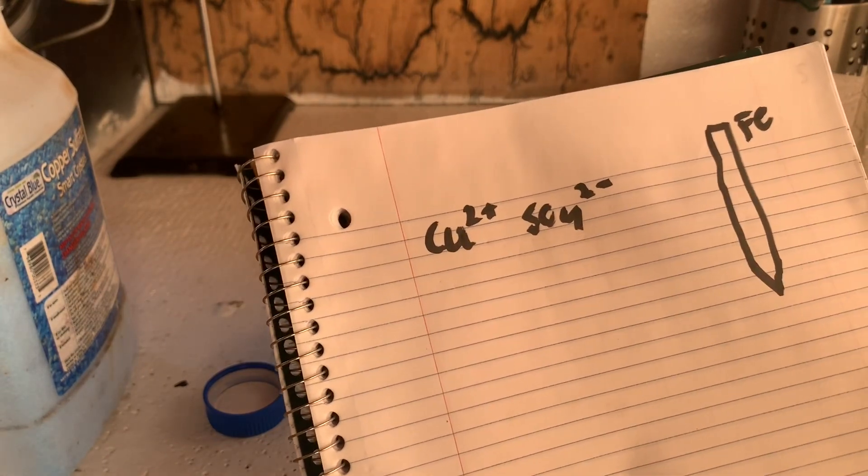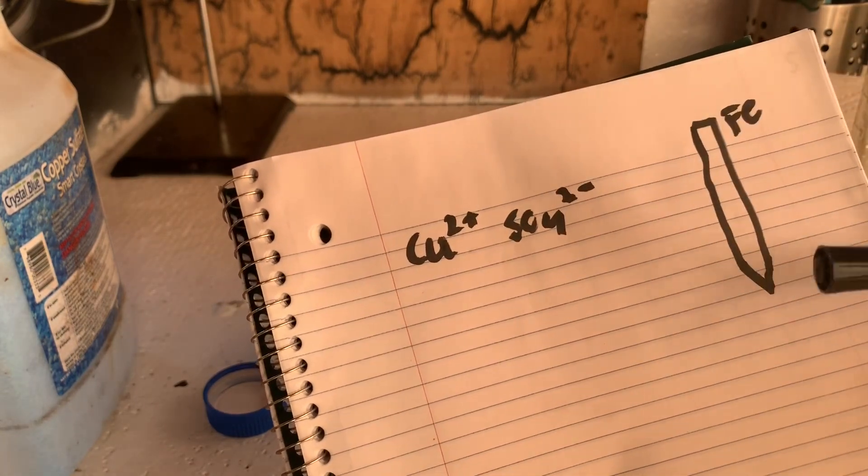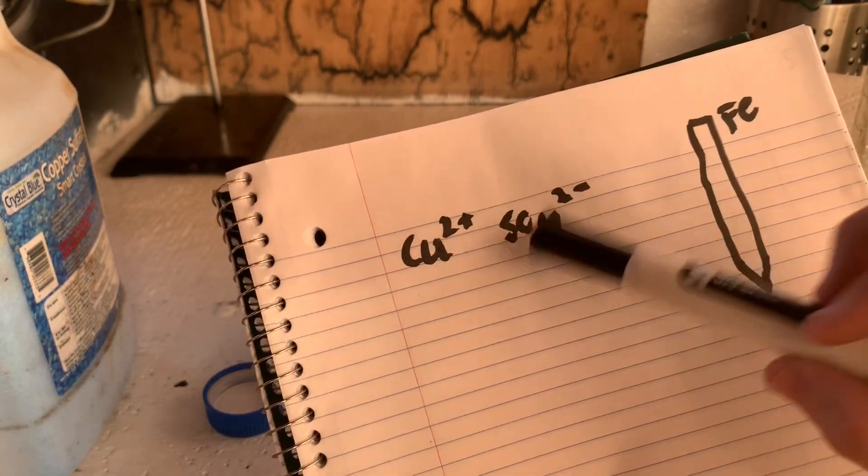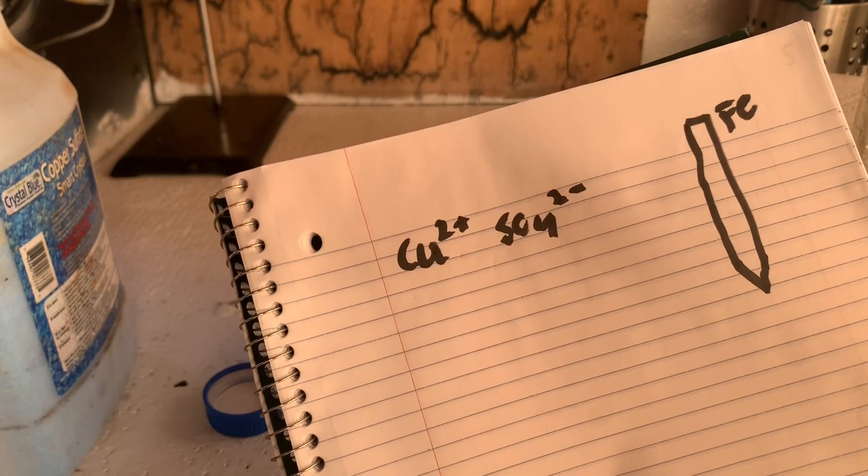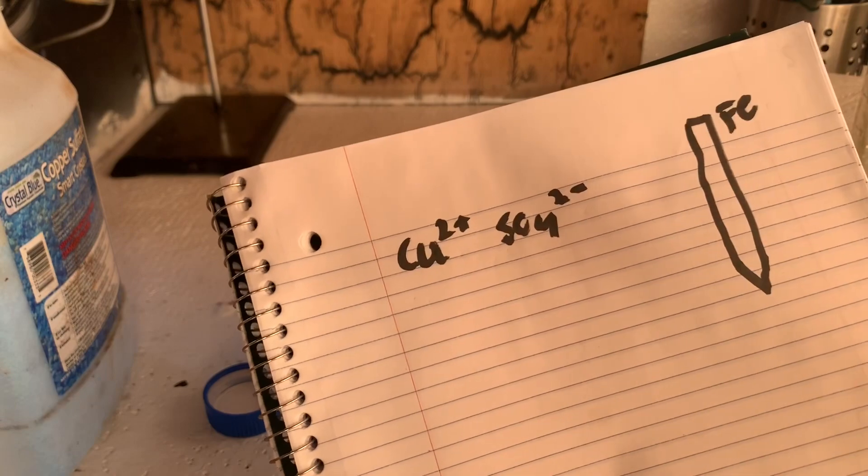But the workaround is to nickel plate this first, and then you can copper plate onto the nickel where the nickel won't have this reaction with the sulfate ion. Anyway, so that's the wrap up of it. So let's get into actually doing this and I'll show you guys how.